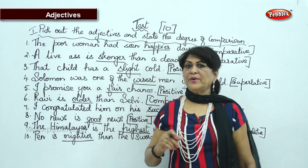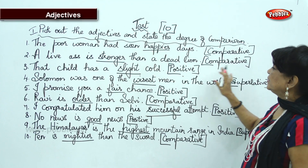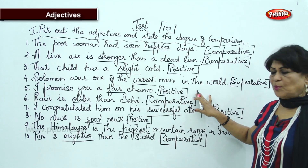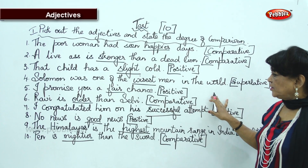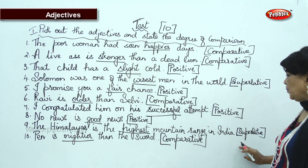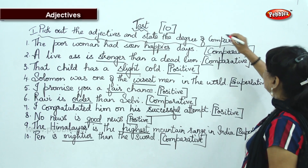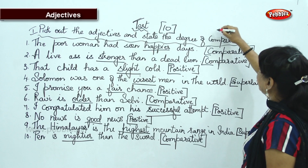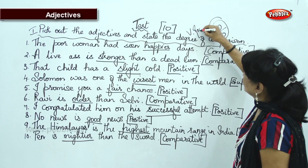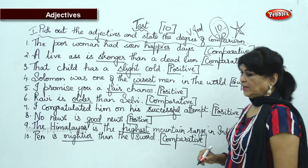Check it up: happier is comparative, stronger is comparative, slight is positive, wisest is superlative, fair is positive, older is comparative, successful is positive, good is positive, highest is superlative, and mightier is comparative. Have you got 10 full marks? Very good — I will give you 10 on 10. Keep it up!